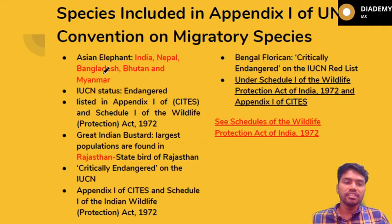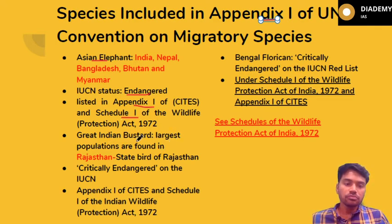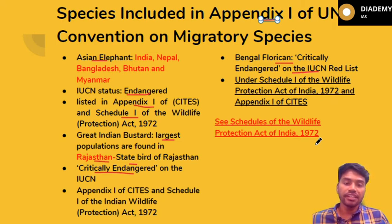The three species recently included in Appendix I of the Bonn Convention are: the Asian Elephant, whose range extends across India, Nepal, Bangladesh, Bhutan, and Myanmar — its IUCN status is Endangered; the Great Indian Bustard, whose largest population is in Rajasthan — it is the state bird of Rajasthan and is Critically Endangered according to IUCN; and the Bengal Florican, which is also Critically Endangered. All three species are included in Appendix I of CITES as well as Schedule I of the Wildlife Protection Act, 1972. Definitely one question will come from this area directly or indirectly.